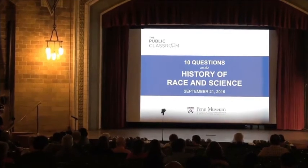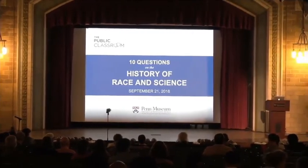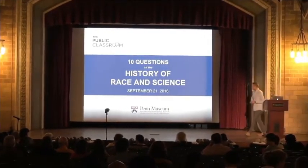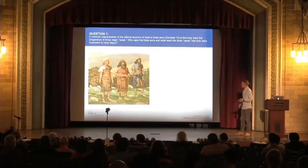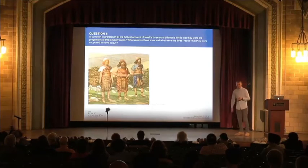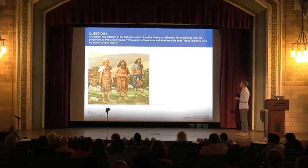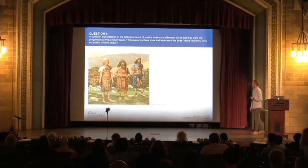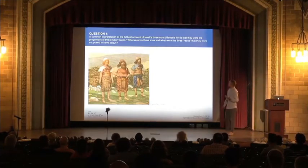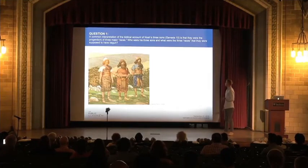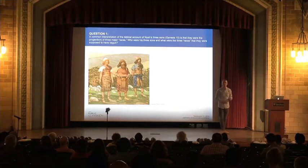I'm going to be asking a series of questions about the history of race, science, and anthropology. And if you have an answer, raise your hand. This one actually goes back rather a long time. Question one: A common interpretation of the biblical account of Noah's three sons in Genesis 10 is that they were progenitors of three major races. Who were his three sons and what were the three races that he was supposed to have begun?